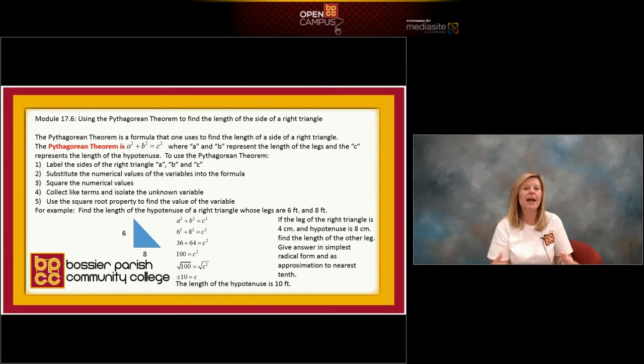To use the Pythagorean theorem, what we need to do is read our information and draw a triangle and label it. We have to know if we're given side a, side b, or side c. Then we would substitute those numbers into the formula. We would square any numbers we have, and then we would start collecting like terms to isolate our variable.